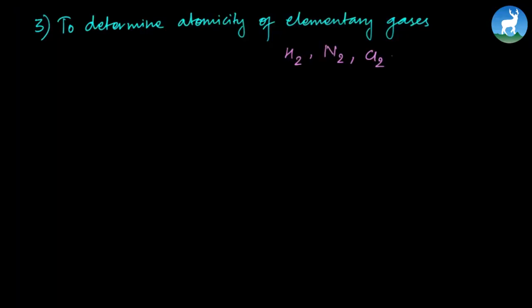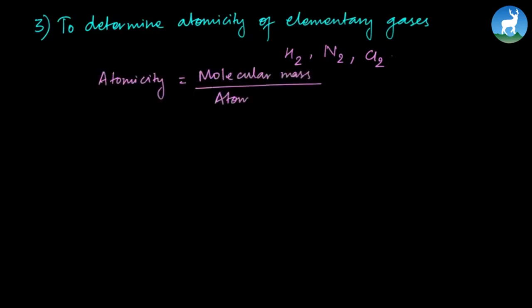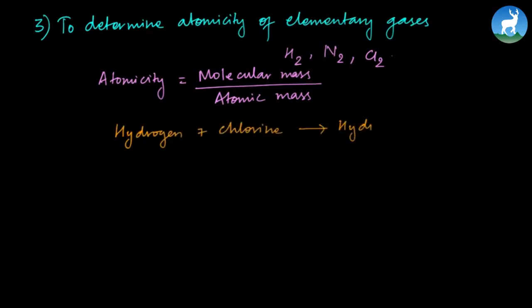Atomicity is determined by molecular mass divided by atomic mass. For example, hydrogen and chlorine combine to form hydrogen chloride. We use two volumes of hydrogen and one volume of chlorine to form two volumes of hydrogen chloride.